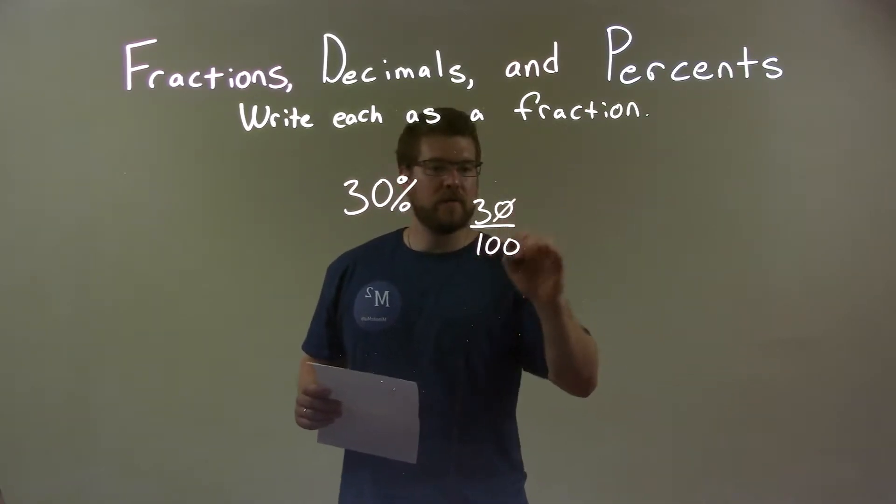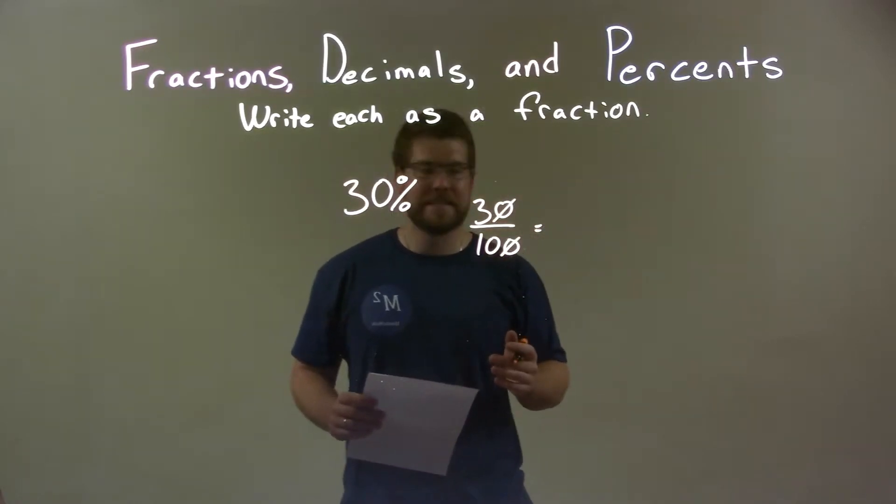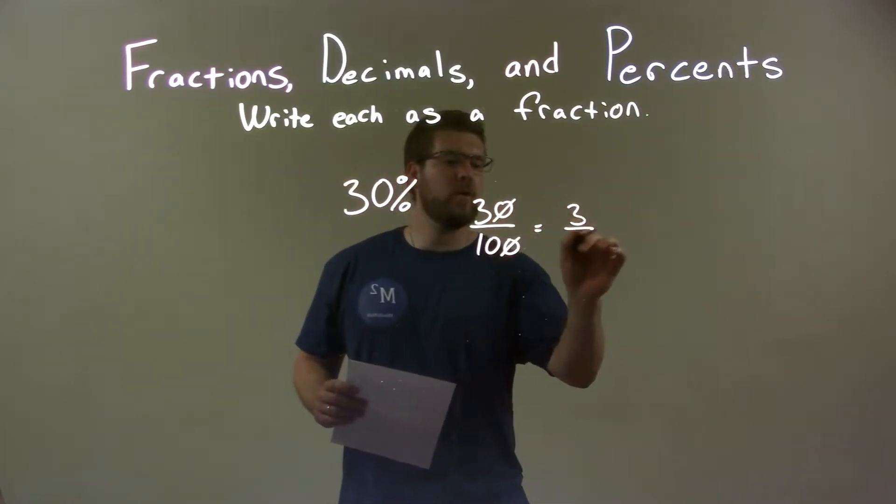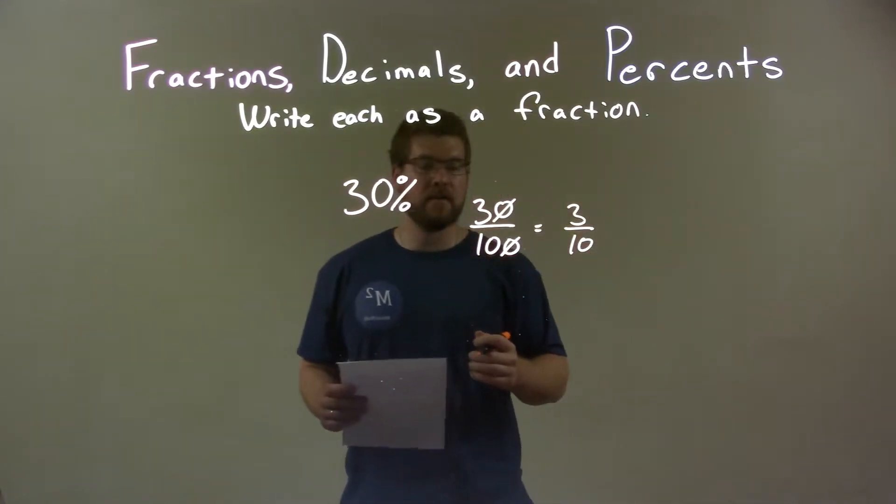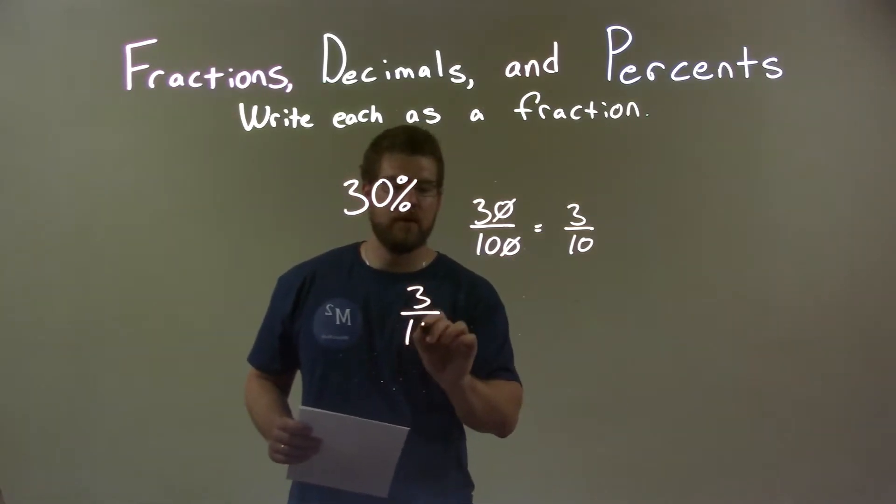So we have 30 over 100 and we now need to simplify that. Well luckily the trailing zeros are easy to simplify, dividing both the numerator and the denominator by 10, giving us 3 over 10. There's nothing else that we can simplify here. We can't break that down anymore. So our final answer is 3 over 10.